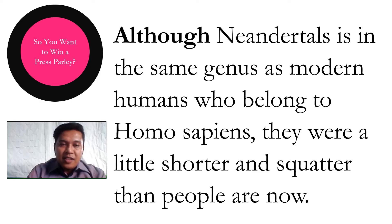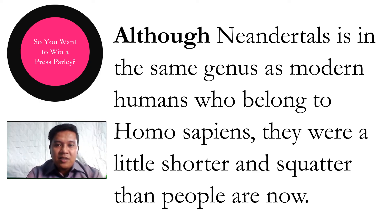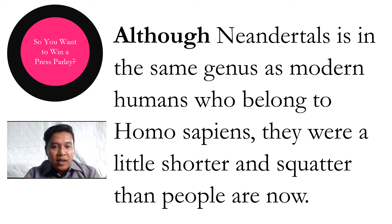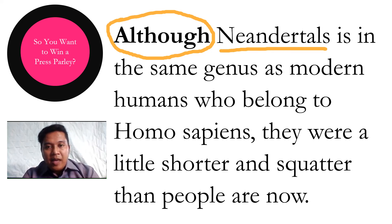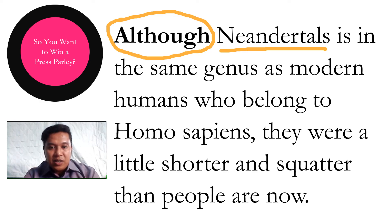In this example: although Neanderthals are in the same genus as modern humans who belong to Homo sapiens, they were a little shorter and squatter than people are now. So we have the signal word 'although' here, so that we'd be able to have a clearer understanding of the term Neanderthals.